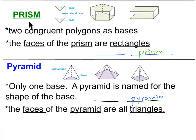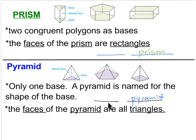Think of it like a family name — just like you have a last name. For prisms, the family name is 'prism,' so the last name would be prism. The first name is the shape of the base, which is why we have a triangular prism, pentagonal prism, and rectangular prism. It's the same concept for pyramids: 'pyramid' is the family name, and the first name is the name of the base — triangular pyramid, pentagonal pyramid, square pyramid.